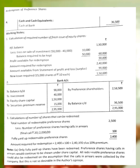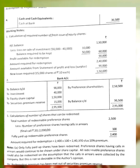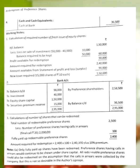Total number of preference shares = 2,500. Less: preference shares not fully paid (calls in arrears) = 100 shares. Therefore, number of preference shares eligible for redemption = 2,400 shares. Now we proceed to the journal entries and solution.